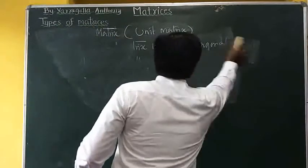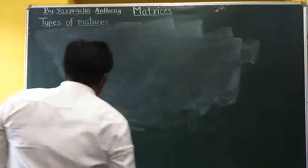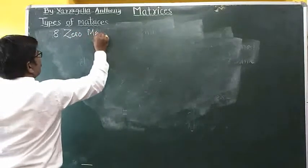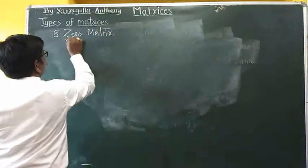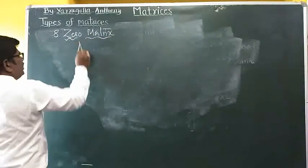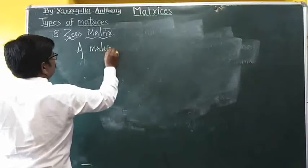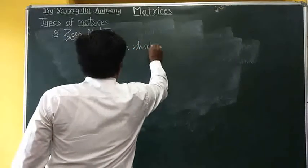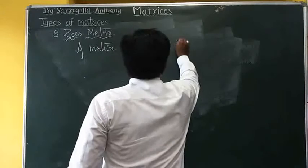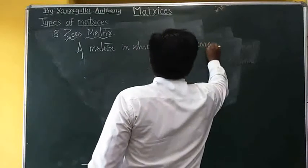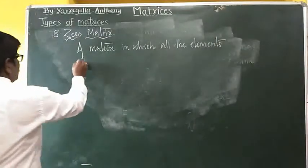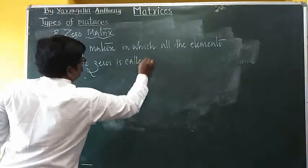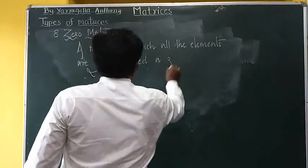The last type of matrix is the zero matrix. A matrix in which all the elements are zeros is called a zero matrix.